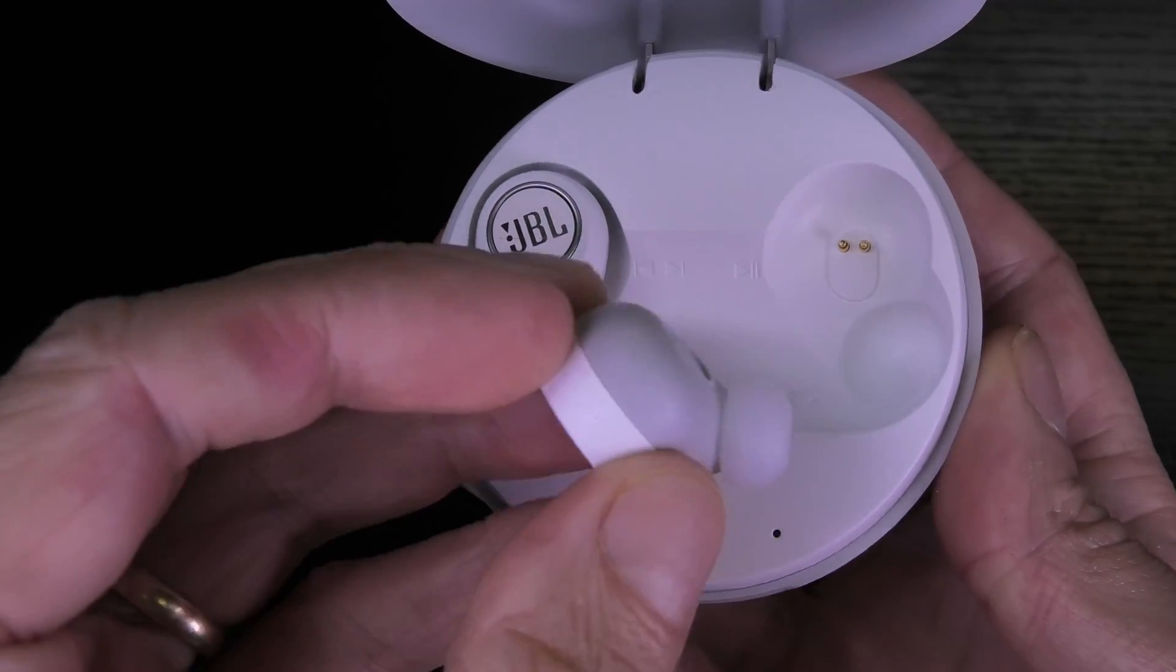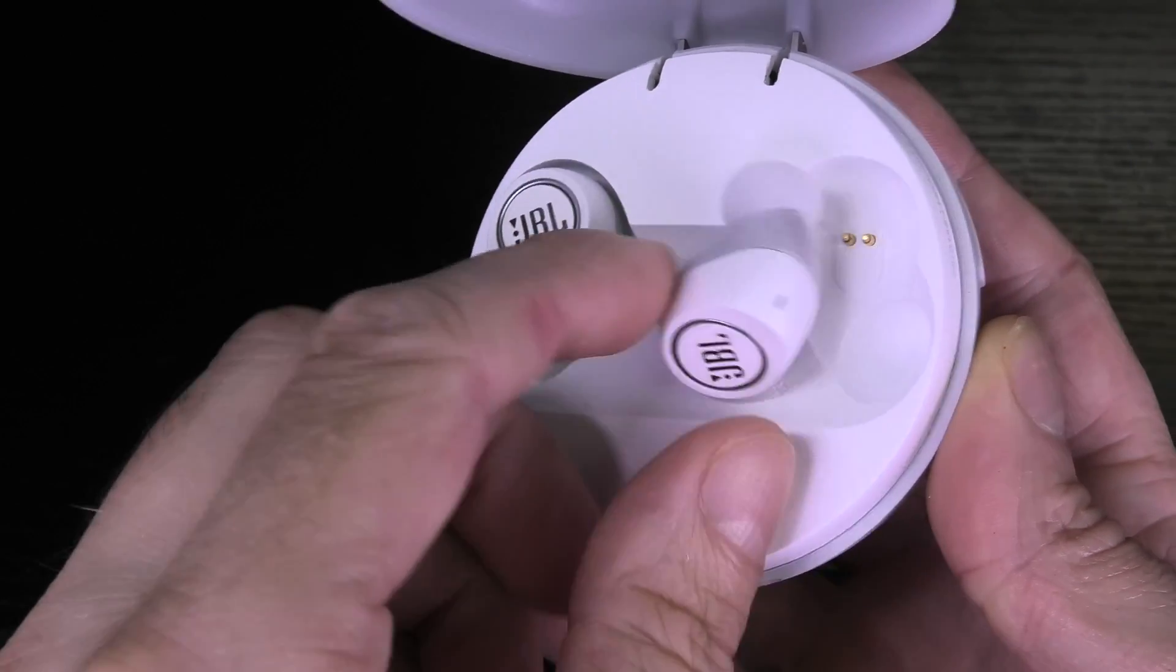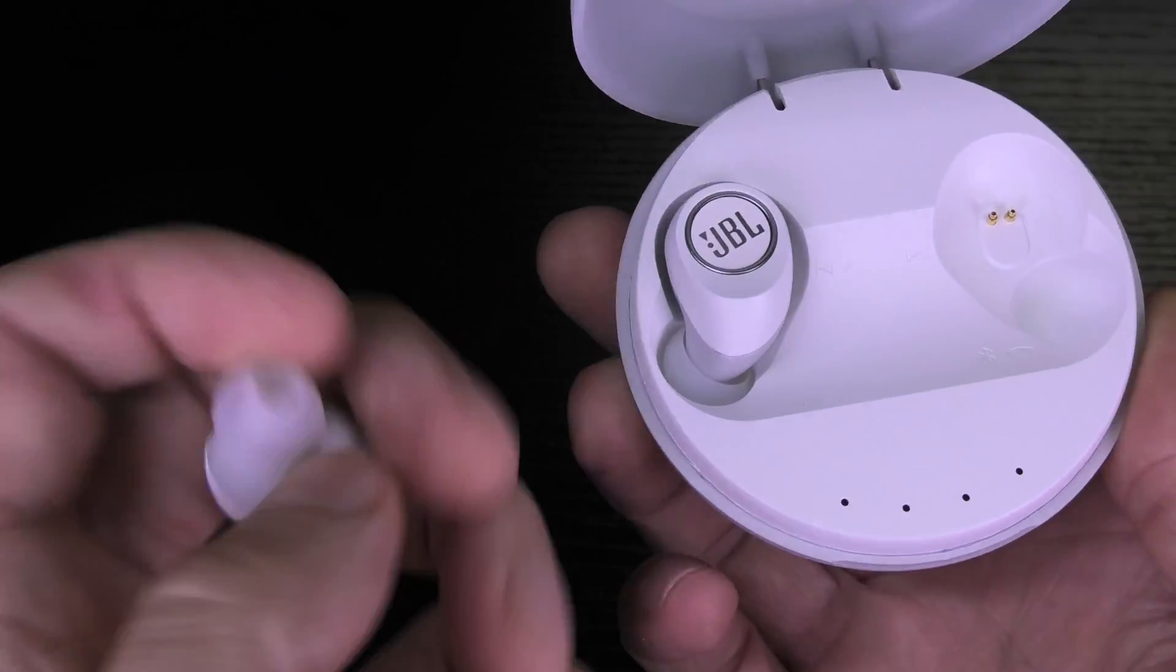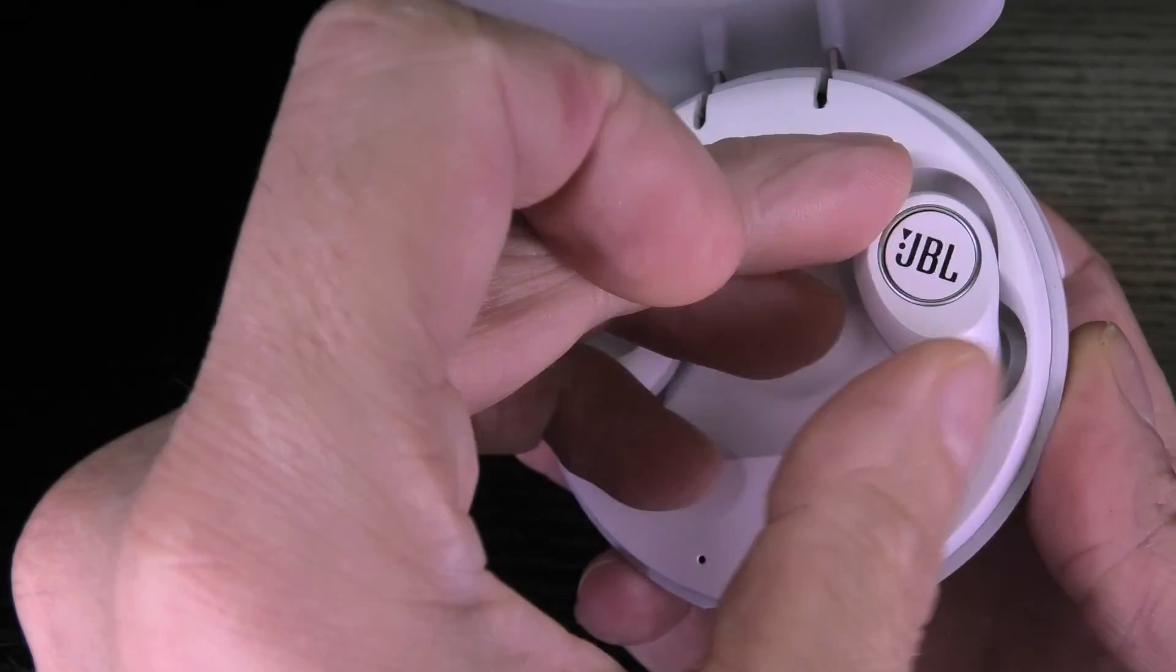So you see here the left one stays fine but the right one just always keeps falling out. And so the problem is with one of the magnets inside of the charging case. So I am going to show you how to fix that today.